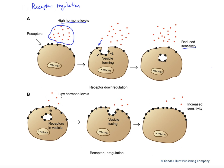Just as we had reduced sensitivity to high hormone levels, we could have increased sensitivity to low hormone levels, as we see down here. In this case, vesicle-stored receptors can be exocytosed and added to the membrane, enhancing the likelihood of interaction between this smaller number of hormones and the increased number of receptors. This, of course, increases sensitivity to this particular hormone.